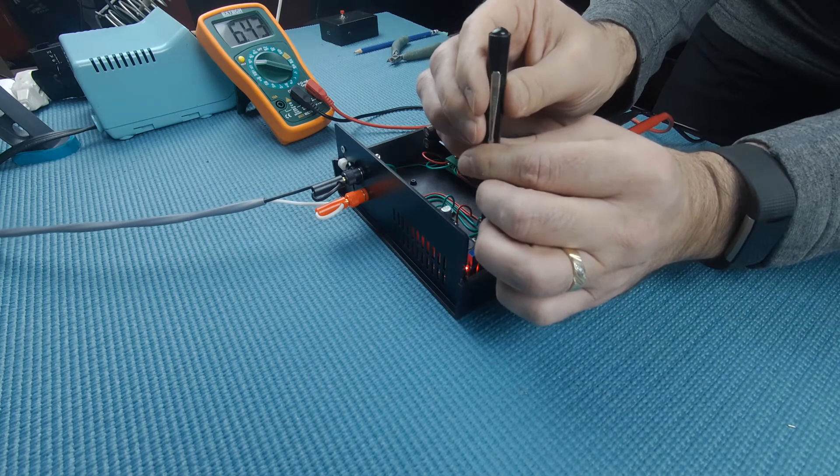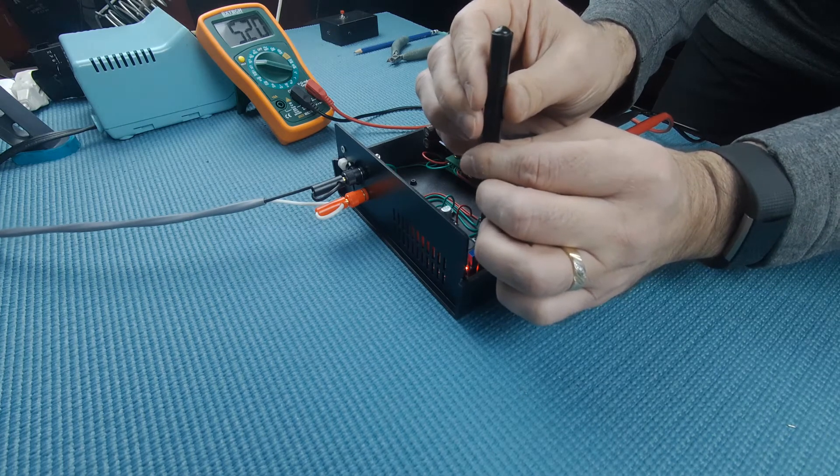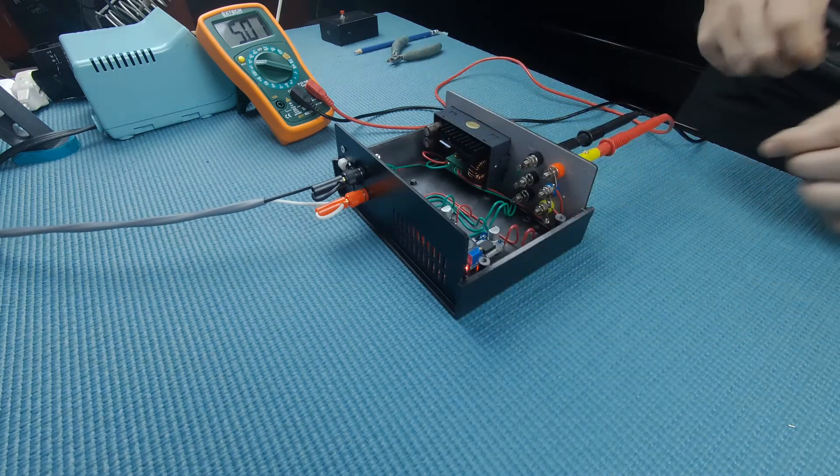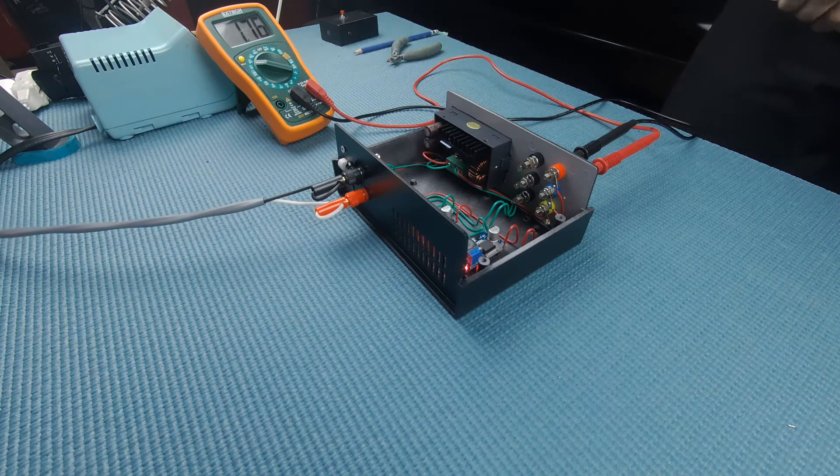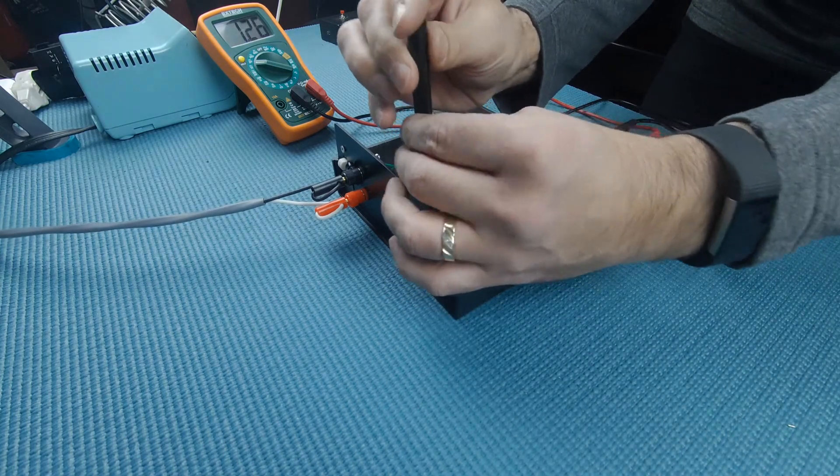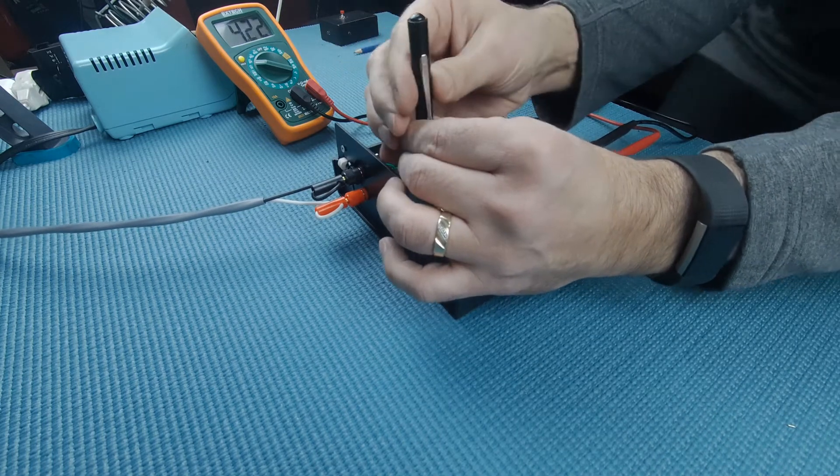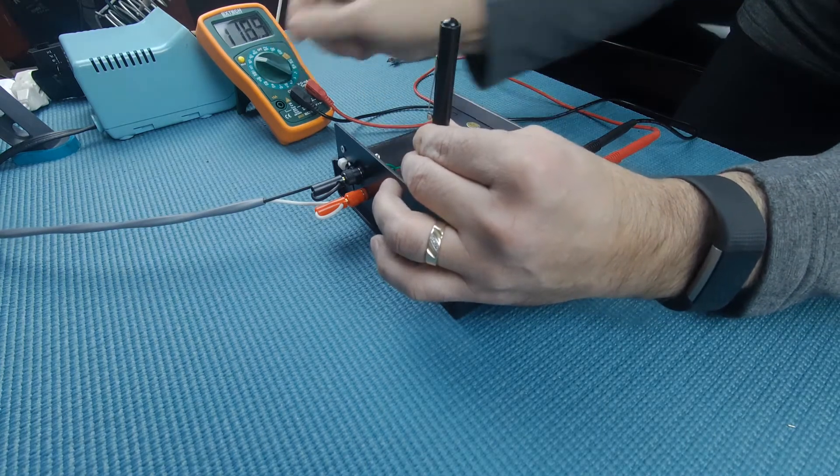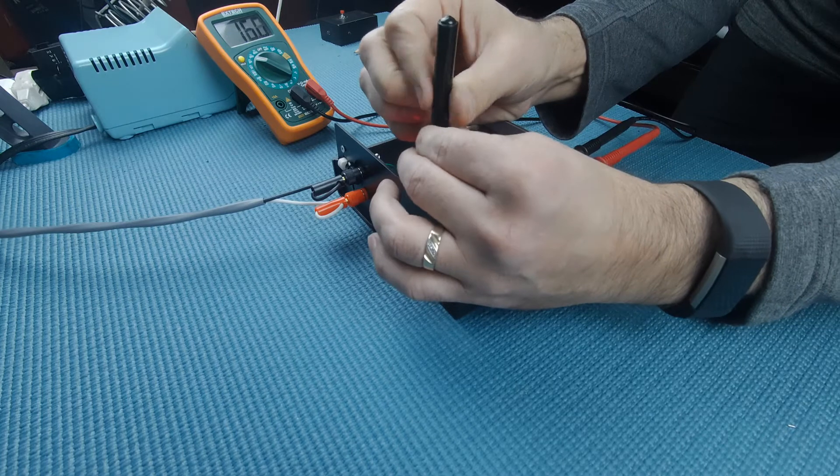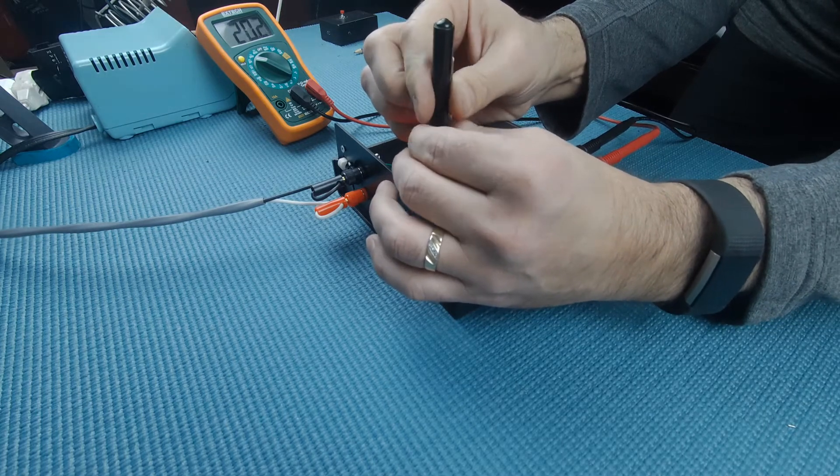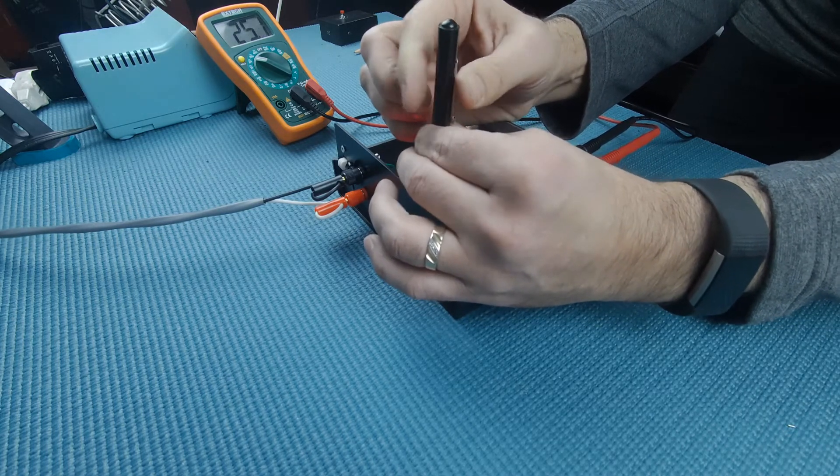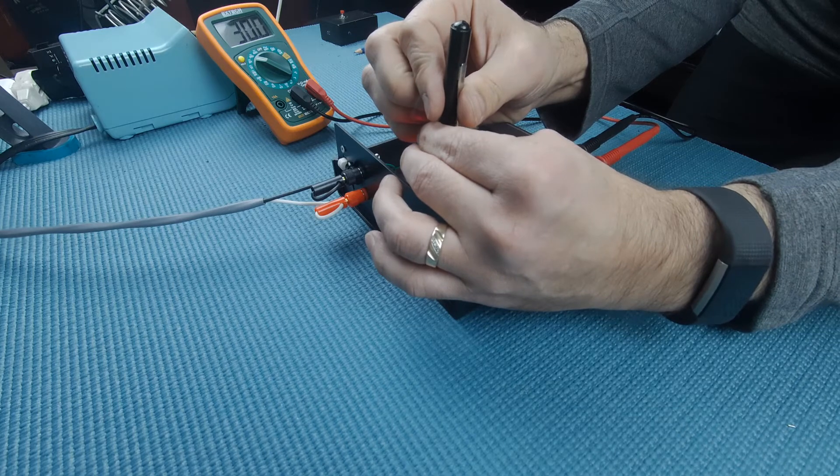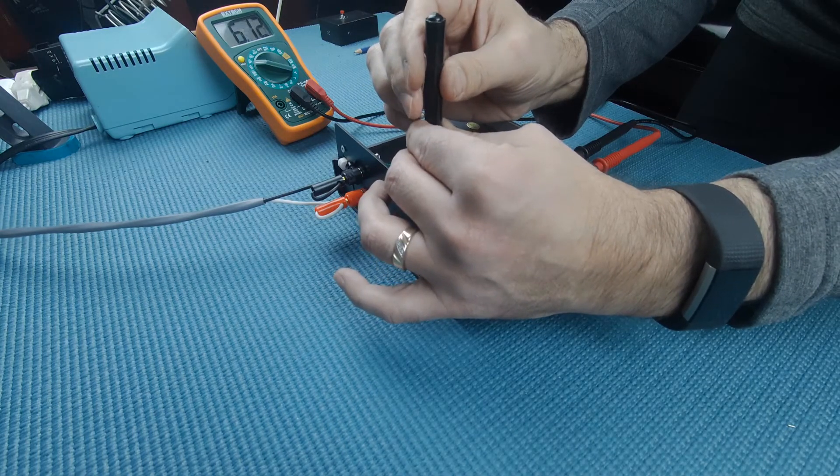I will set the first converter to 5 volts to power devices like Arduinos and Raspberry Pi's. I'll confirm the second converter as well. I will set this one at 6 volts to power devices.